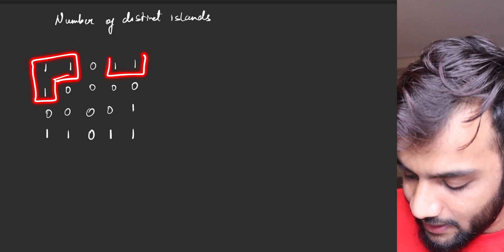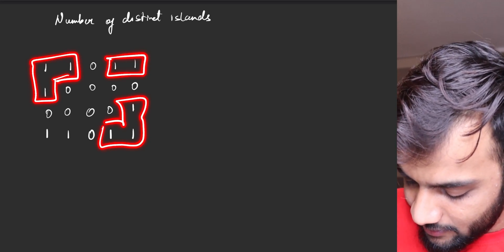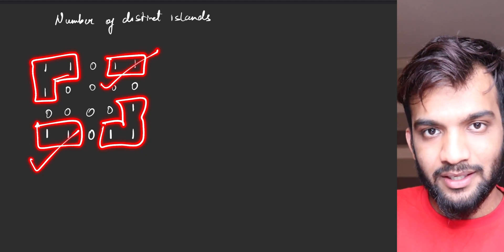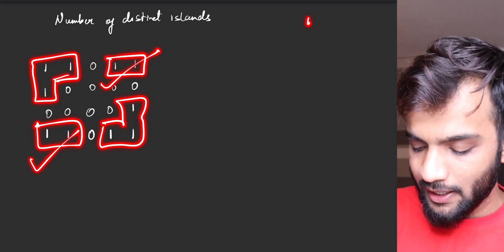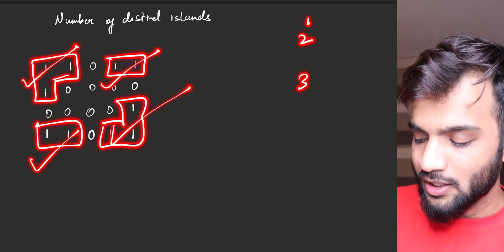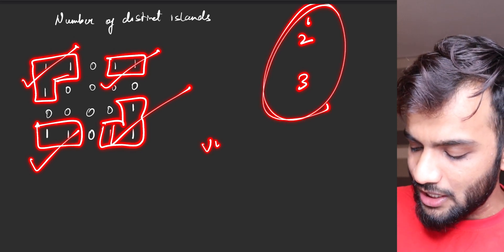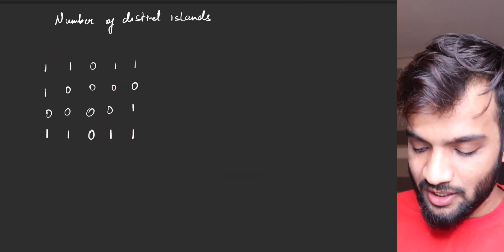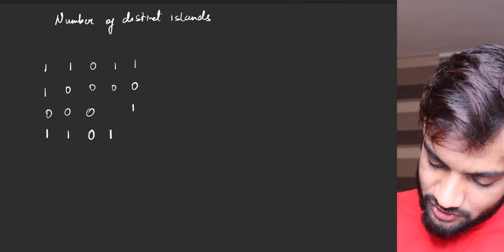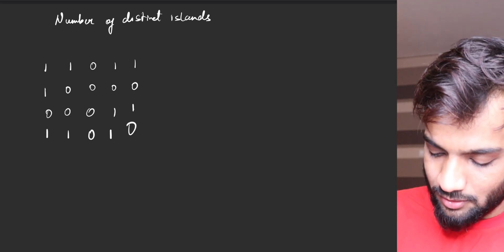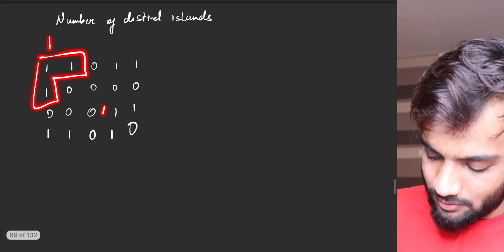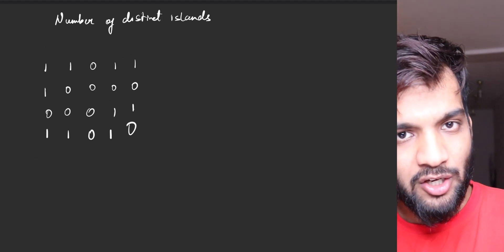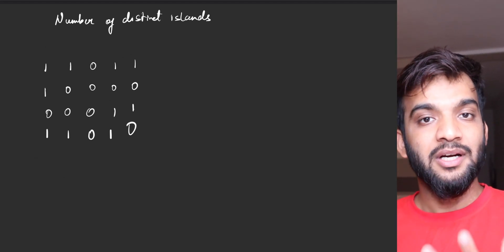The ones that are connected are marked in red. This and this are identical, so I count them as one. I count another as two, and this one as three — so there are three unique distinct islands. Had the question been like this, both would be equal, giving two distinct islands.